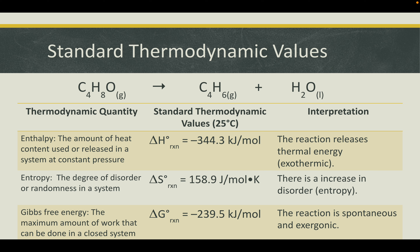Our Gibbs free energy, or the maximum amount of work that can be done in a closed system, our delta G reaction value, is negative — negative 239.5 kilojoules per mole, to be exact. From this, we can infer that the reaction is spontaneous and exergonic. So in summary, our reaction is exothermic, there is an increase in entropy, it is a spontaneous reaction, and it is exergonic.